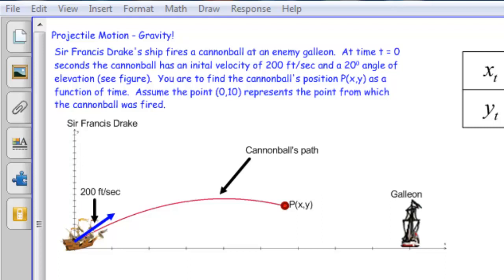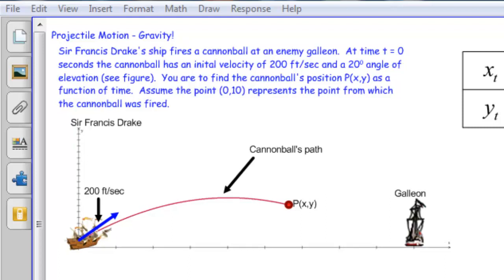Sir Francis Drake's ship fires a cannonball at an enemy galleon. At time t equals 0 seconds, the cannonball has an initial velocity of 200 feet per second and a 20-degree angle of elevation, just like in the figure here. We're to find the cannonball's position point as a function of time.